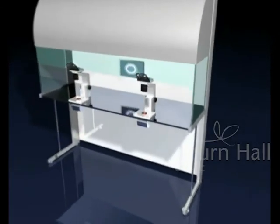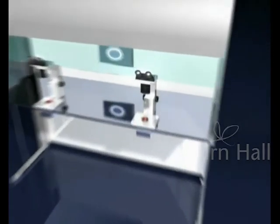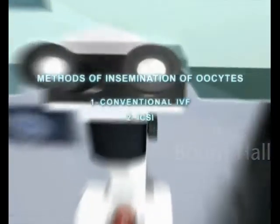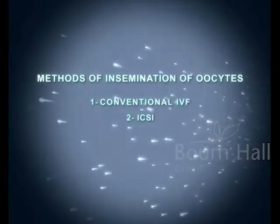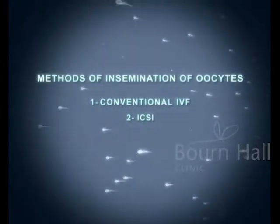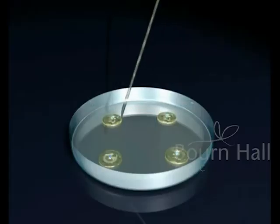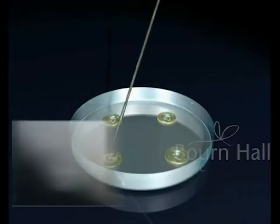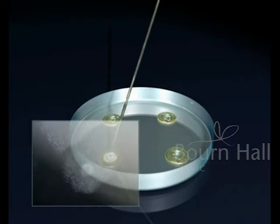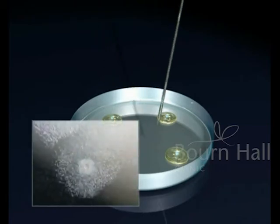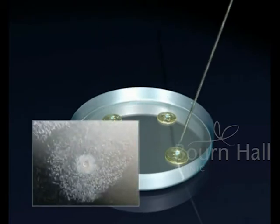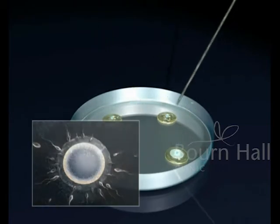There are two types of insemination of oocytes: the conventional way and using ICSI. In the conventional way, a micro-droplet of concentrated sperm is added to each of the wells containing the ova.